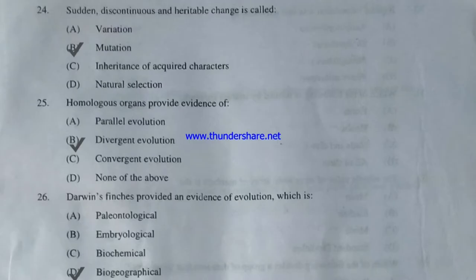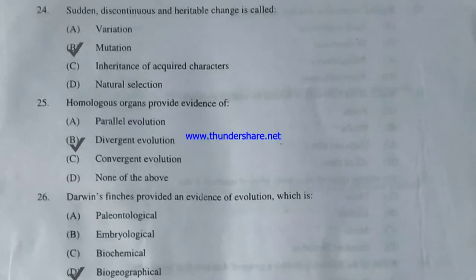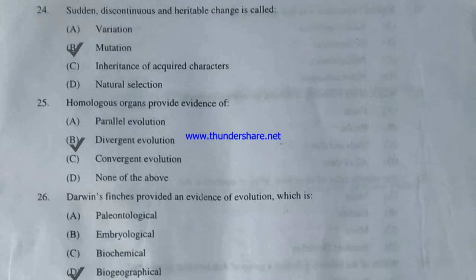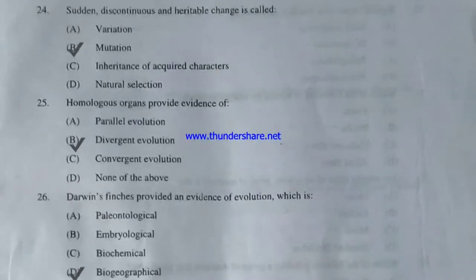Homologous organs provide evidence of — parallel evolution, divergent evolution, convergent evolution, or none of the above? The answer is divergent evolution — option B is correct. Darwin's finches provided evidence of evolution which is paleontological, embryological, biochemical, or biogeographical? The answer is biogeographical — Darwin's finches provided biogeographical evidence of evolution.